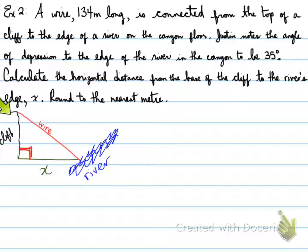So here we have the diagram. A cliff here, a wire attached from the top of a cliff to the base of a river, and this is the canyon floor down here, which is x that we need to find. So let's fill in the information.